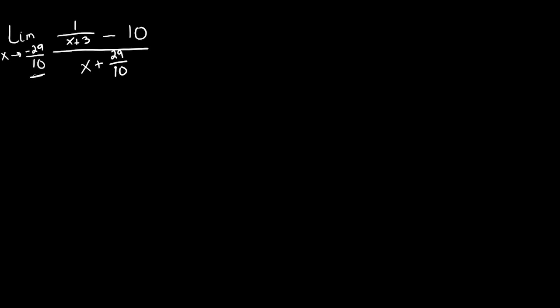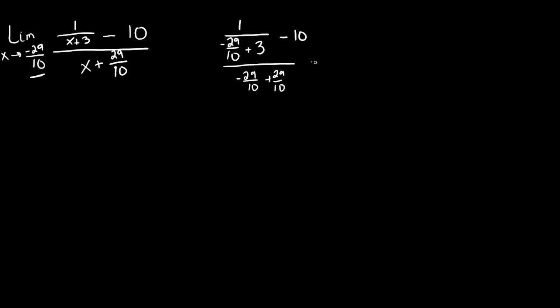So what we're going to do first is plug in negative 29 over 10 in for x for our function that we have given over here. So here we're going to have 1 over negative 29 over 10 plus 3, minus 10, and all this is going to be over negative 29 over 10 plus 29 over 10. We can see that this denominator is going to be 0.